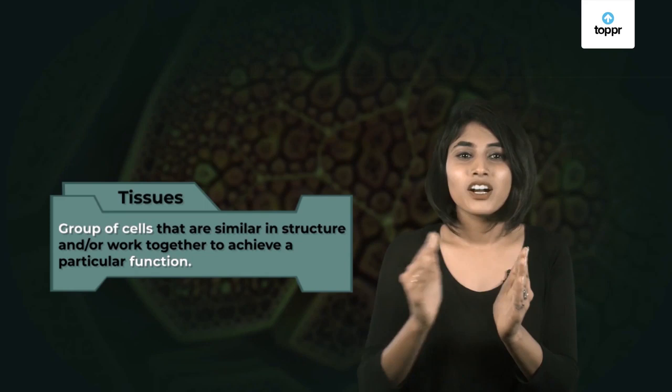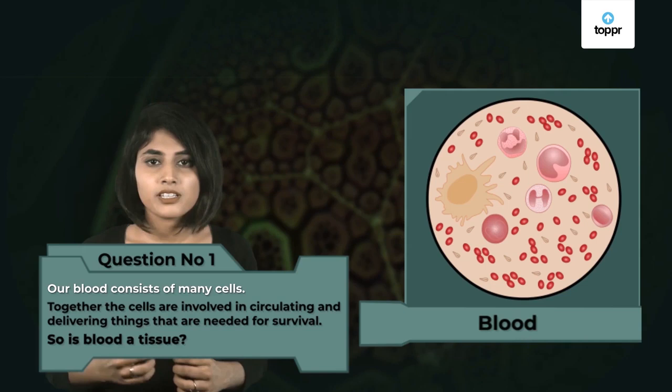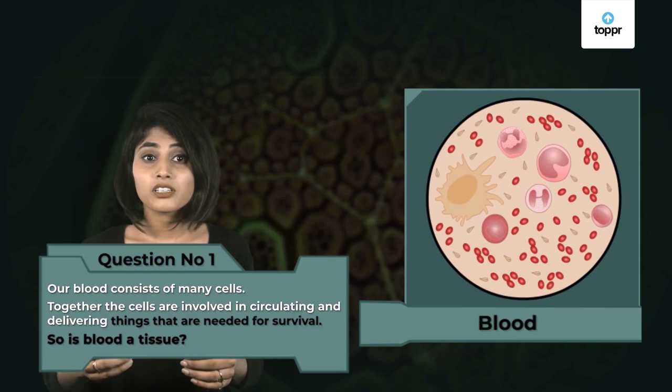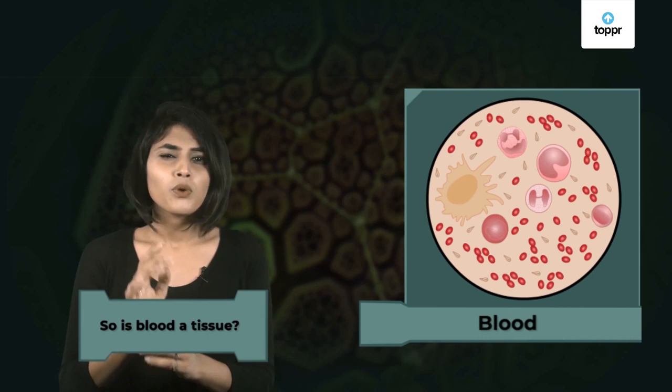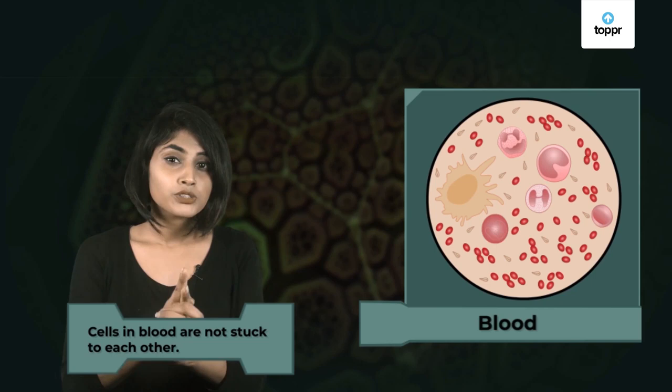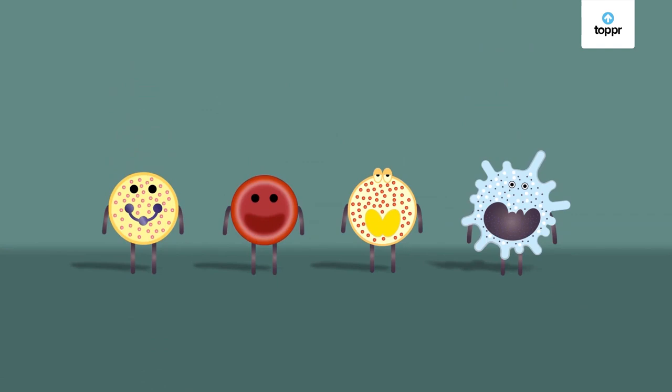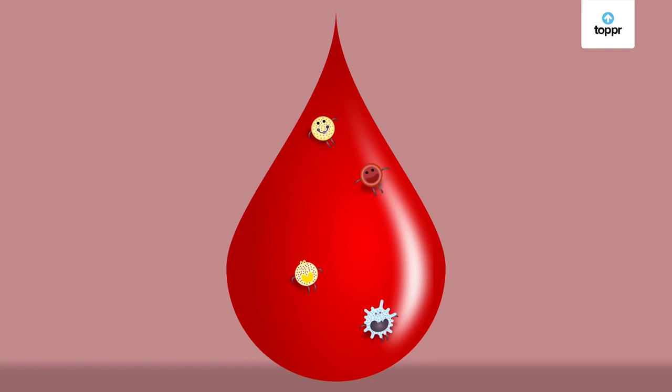Now let me ask you a couple of questions. Question number one: our blood consists of many cells together, and these cells are involved in circulating and delivering things needed for survival — so is blood a tissue? Of course it is! Some of you might have had doubts, since cells in blood are not stuck to each other, and blood is a liquid. But just like it doesn't matter how many kinds of cells there are in a tissue, it also doesn't matter if the cells stick to each other or if the tissue is in liquid form — as long as the cells work as a team towards a common function, they form a tissue.